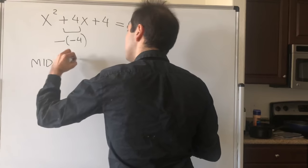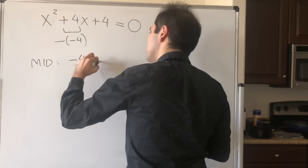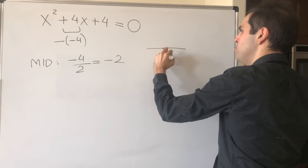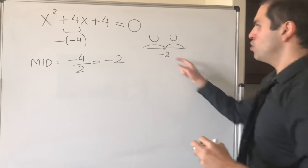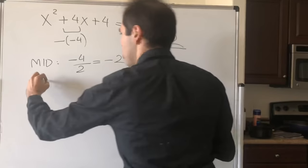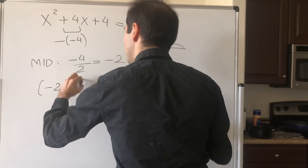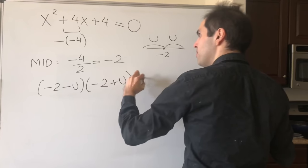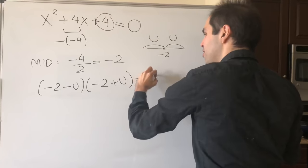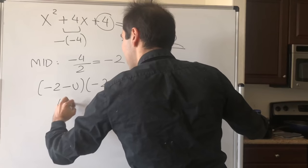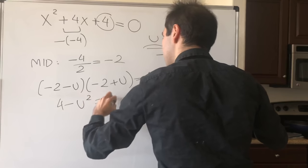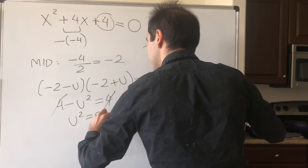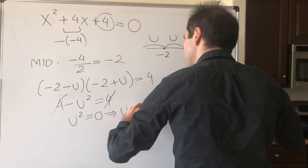And so the midpoint is -4/2, which is -2. So again, the midpoint here is -2. The left root is -2 - u, the right midpoint is -2 + u, and that equals 4. So you get 4 - u² = 4. This cancels out. And you basically get u² = 0, which gives u = 0.